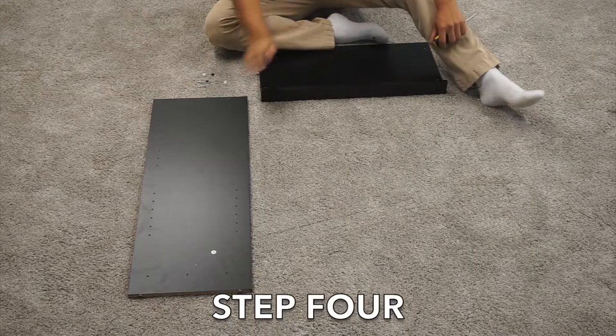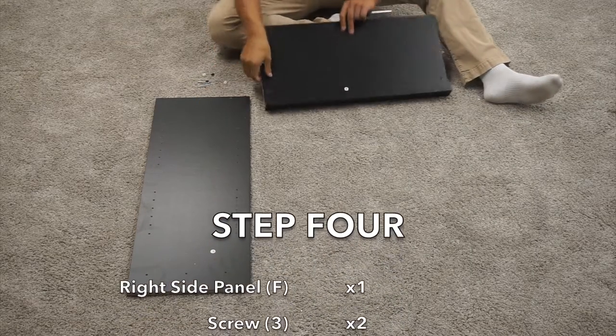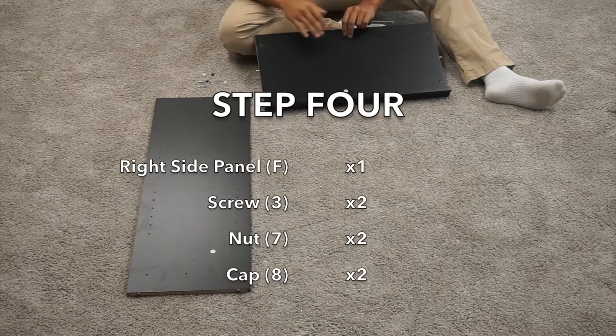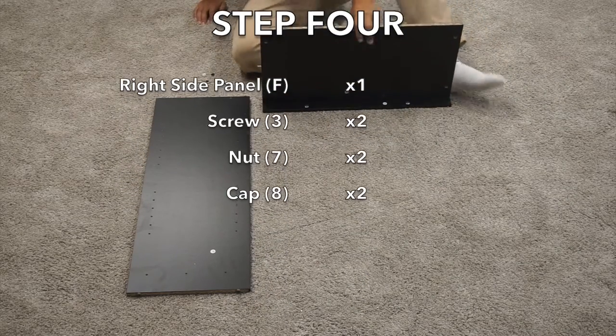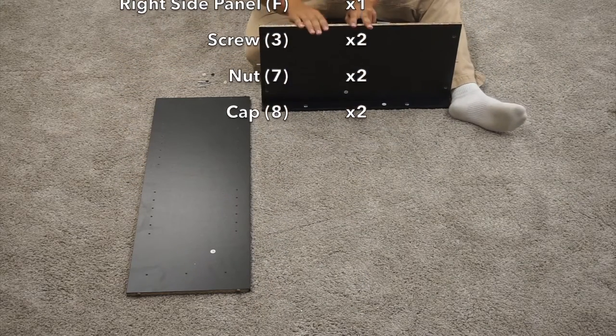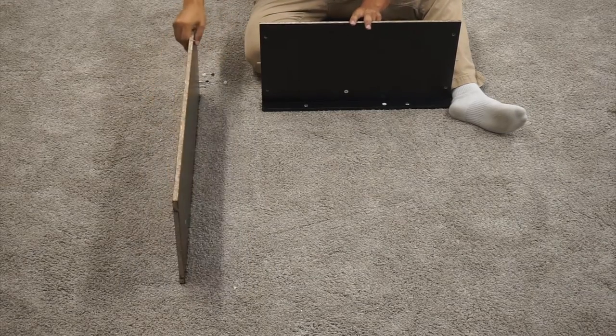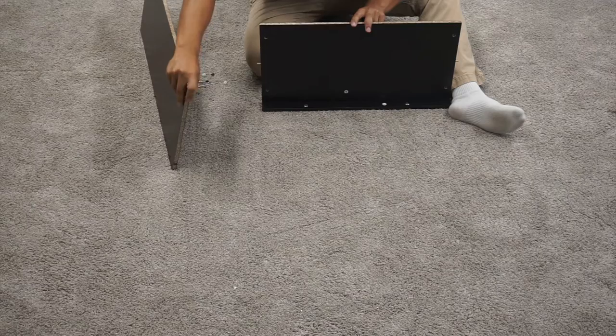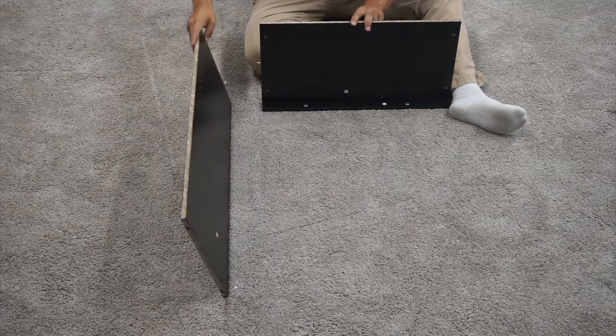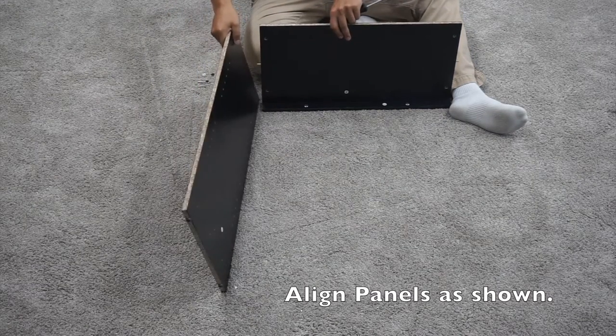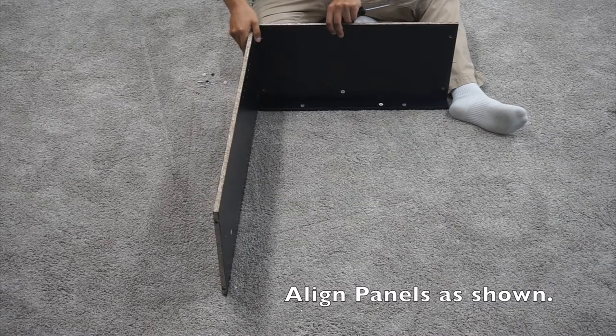In step four, you'll need your F panel and your A panel that is attached to a C panel. You will want to align the A panel like this with the unfinished side facing up, and then your F panel like so, so that the little feet are pointed away and the unfinished side is facing up. Then you can slide it on there.